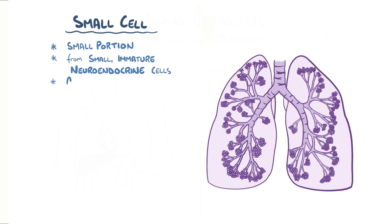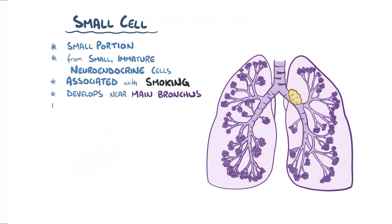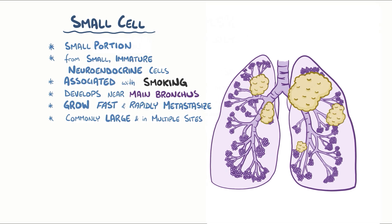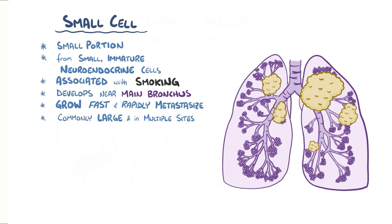Small cell carcinomas are strongly associated with smoking and usually develop centrally in the lung, near a main bronchus. In general, these grow the fastest and more rapidly metastasize to other organs than other types of lung cancer. Because of this, by the time it's diagnosed, it's common to find large tumors in multiple locations both within and outside the lung. Typically, when small cell carcinoma is within one lung, it's considered limited. If it spreads beyond one lung, it's considered extensive.